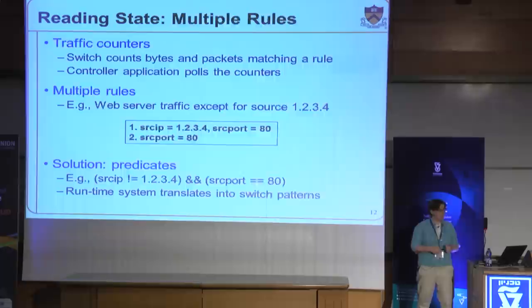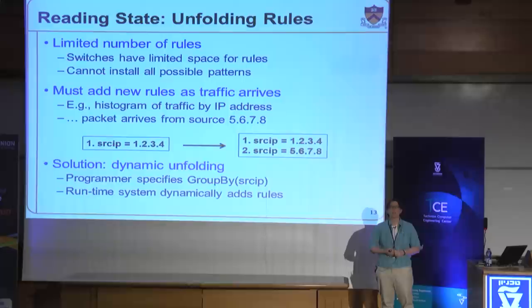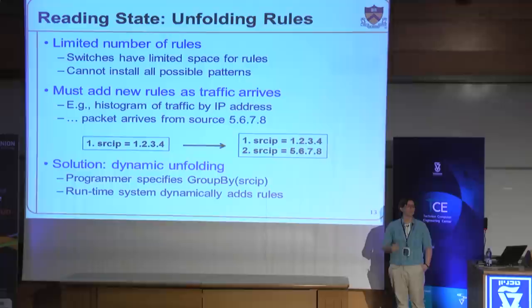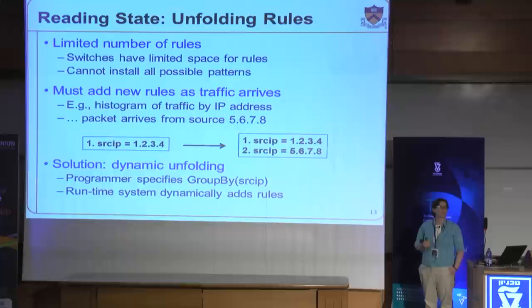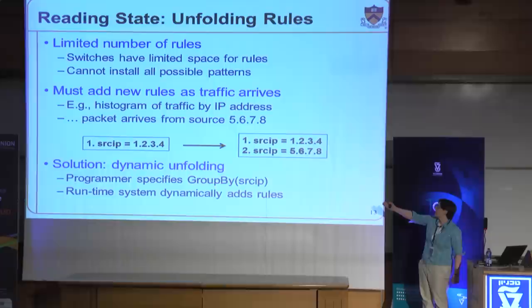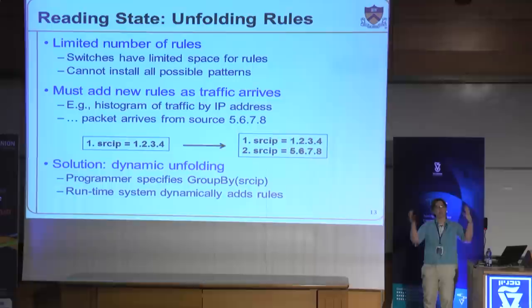In practice we often have a limited number of rules we can store on a switch. Sometimes you want a histogram of traffic by IP address — but there are 2 to the 32 potential IP addresses, so it's not reasonable to install rules for all of them ahead of time. Instead, whenever you see a packet from a new source IP address, you'd like to reactively install a new rule to have a counter for that traffic. Rather than burden the programmer with subscribing to these events and reactively installing rules, we allow the programmer to just say 'I want to collect something grouped by source IP address,' and the runtime system automatically dynamically unfolds the rules as necessary, installing rules for each IP address that manifests and timing out rules when a host is no longer active.